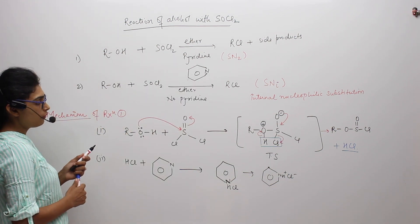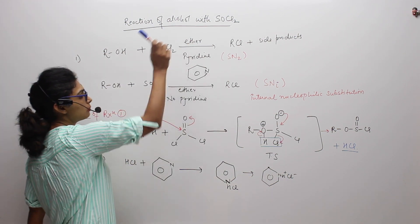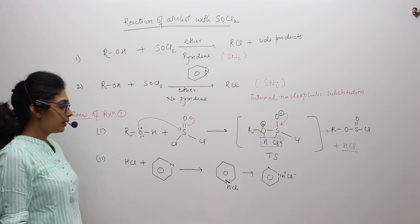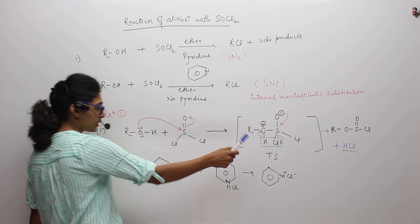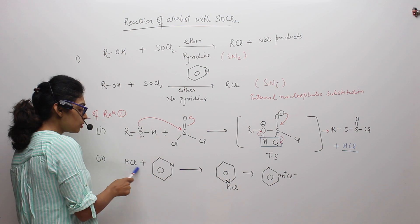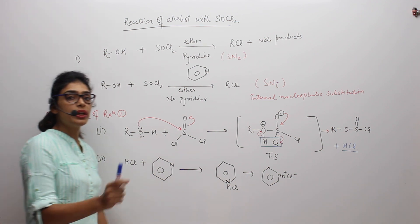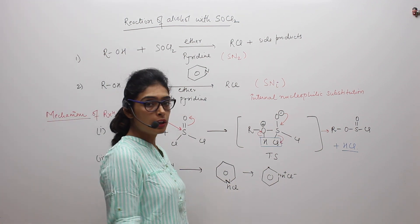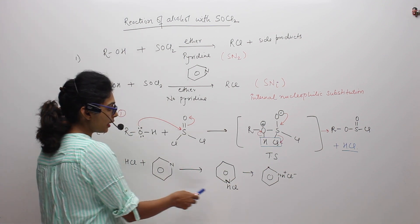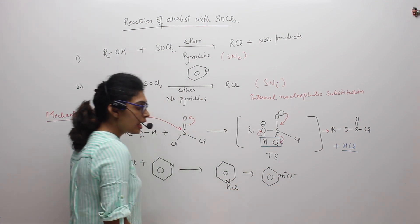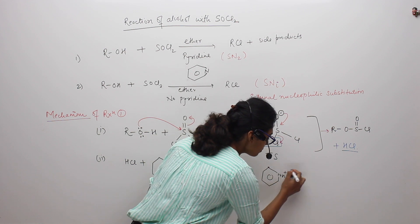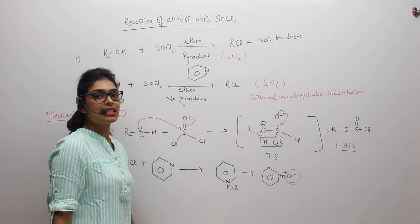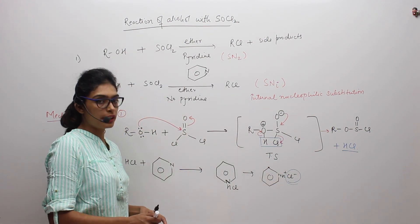Now if you can notice, we had ether as a solvent and we have got an HCl over here. To dissociate this HCl and make chlorine available for the nucleophilic reaction, we have reacted it with pyridine so that it can get converted into salt and the Cl minus becomes available for the next type of reaction, which is again nucleophilic attack.